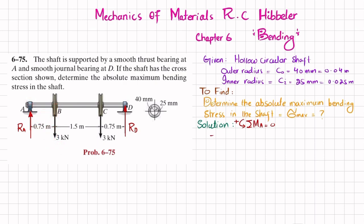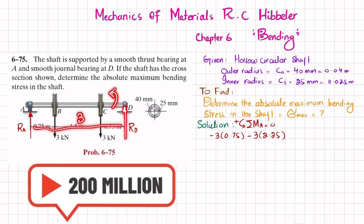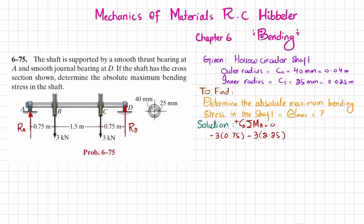The first moment is due to the three kilonewton load at a perpendicular distance of 0.75 meters — clockwise, so negative: minus 3 times 0.75. The second moment is also due to the three kilonewton load at a perpendicular distance of 2.25 meters — also clockwise, so negative: minus 3 times 2.25. The last moment is due to Rd at a perpendicular distance of 3 meters — counterclockwise, so positive: plus Rd times 3. Setting the sum to zero gives 3Rd = 9, so Rd = 3 kilonewtons.